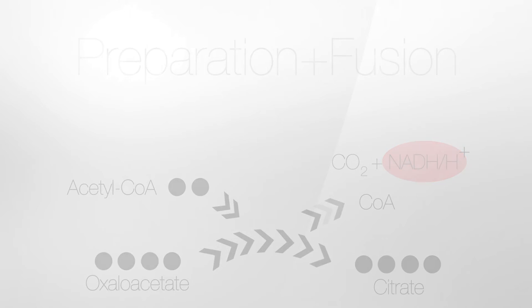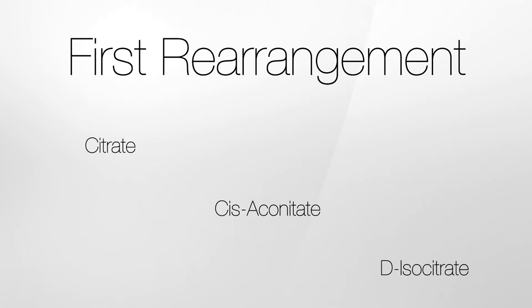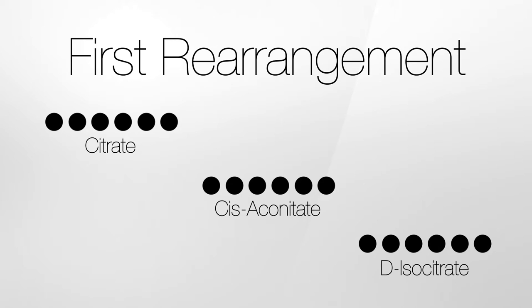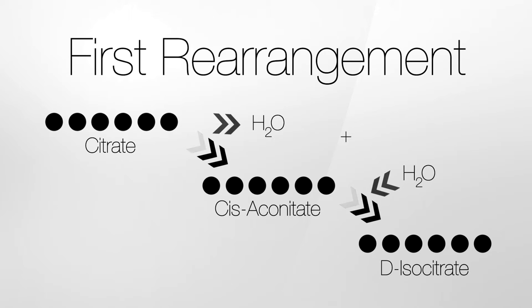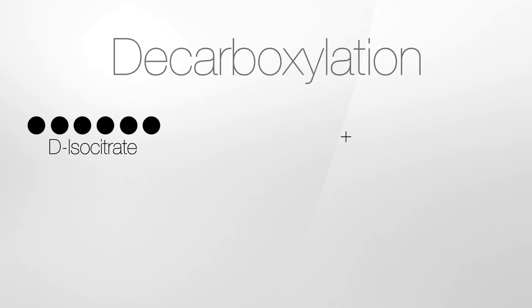The second stage is a rearrangement, or more precisely a reversible isomerization of citrate, a 6-carbon carboxylic acid, to isocitrate by the enzyme aconitase.